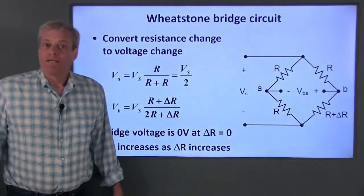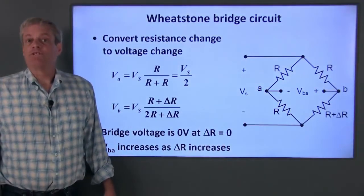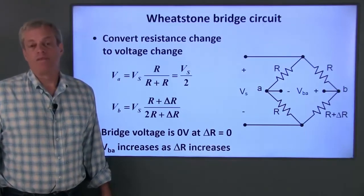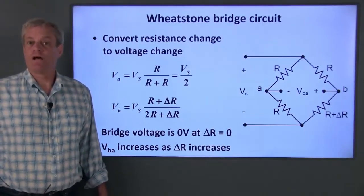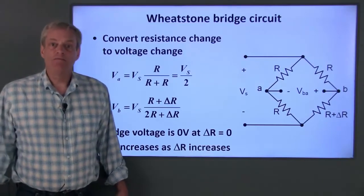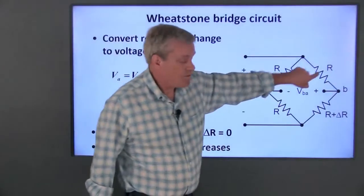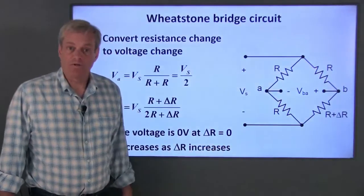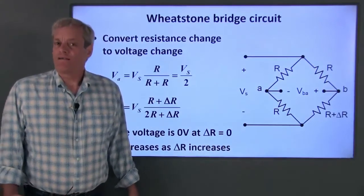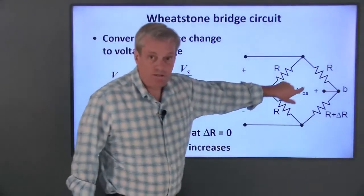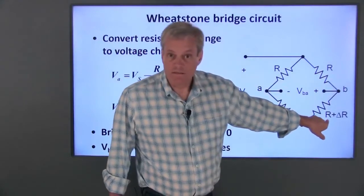This circuit is useful from a conceptual standpoint, but it's difficult to implement without using really expensive precision resistors. In our parts kit, for example, the resistor tolerances are on the order of plus or minus five percent. That means that even if we have resistors with the same nominal resistance, it's very unlikely that they will have the same actual resistance. Another practical problem is that we would need to match the resistance of these three resistors with the nominal resistance of our sensor.